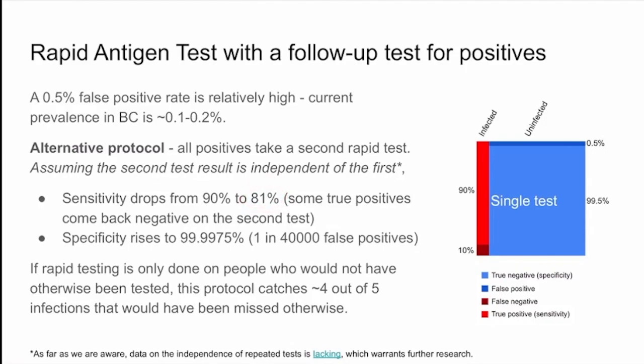So our sensitivity drops from 90% to 81% when we do the second test. But similarly, under the same assumption of independence, the specificity rises to very close to one — a one in 40,000 rate of false positives. That's one over 200 squared, because the specificity would require that you get a false positive twice, and that chance each time is one in 200.